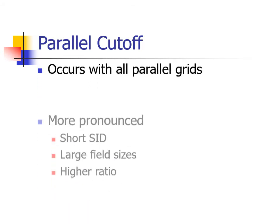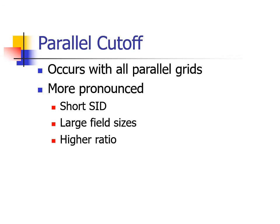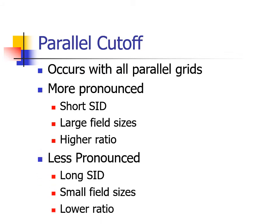So, one can expect that you will see some amount of cutoff on all parallel grids. The amount of cutoff will be more pronounced with short SID exposures, large field size, or higher grid ratios. The opposite of the above list will also produce less cutoff.